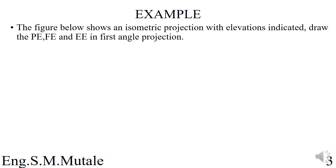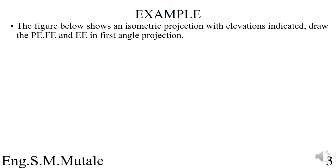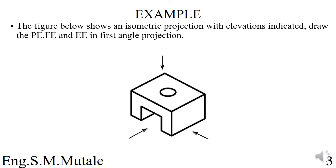Here is an example. The figure below shows an isometric projection with elevations indicated. Draw the plan elevation (PE), front elevation (FE), and end elevation (EE) in first angle projection. We need to draw these three elevations — the front view, the top view, and the side view.